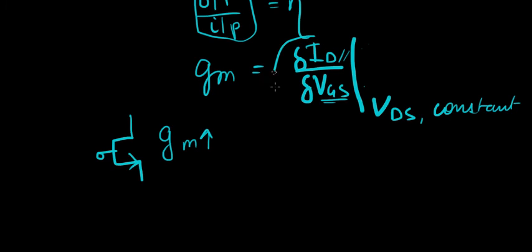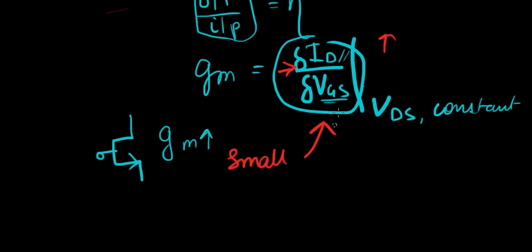That means in this equation your numerator is high, correct? That's when your GM can go high. If your numerator is high obviously relatively speaking your denominator is low. Correct? That means for a small change in VGS I'm getting a large change in current.